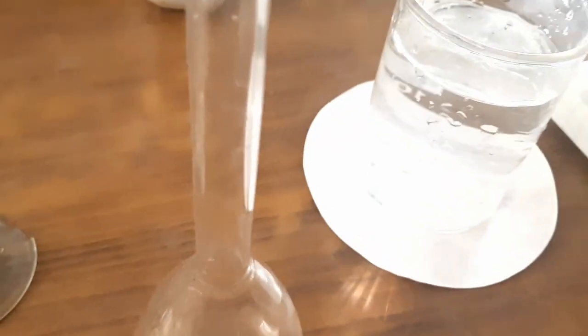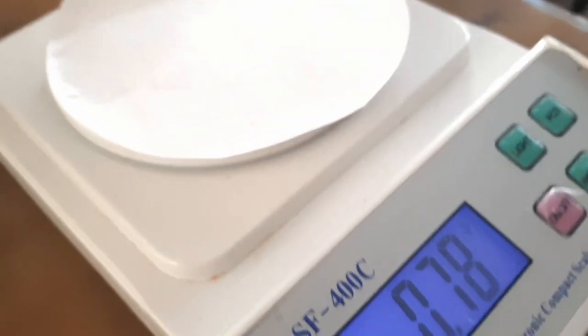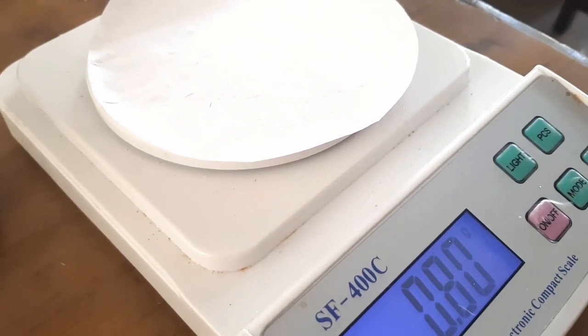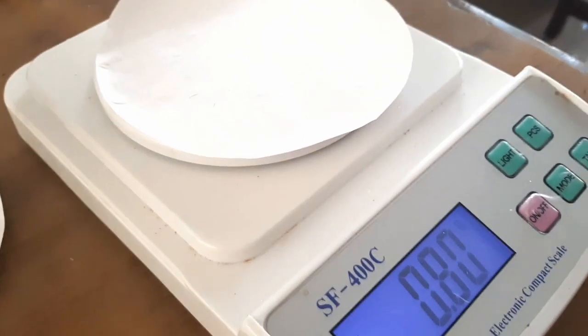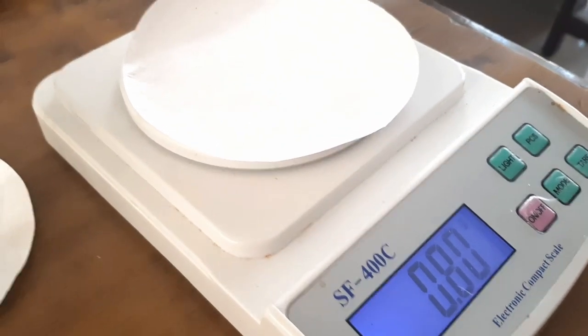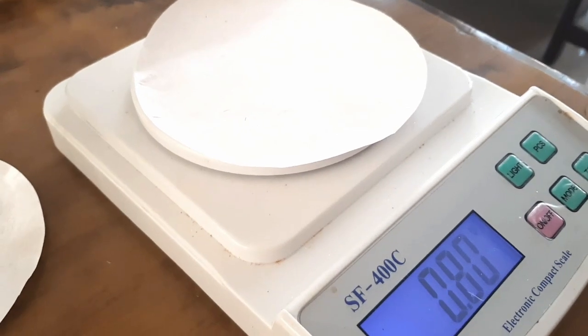I am going to put a filter paper on this. So this is now reading 1.78. This is 0.8 with the paper, so we are going to add 0.8 to our weight. We need 1.96, so we will add that to the weight and measure.